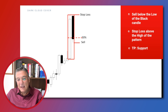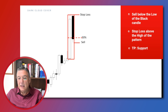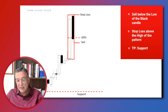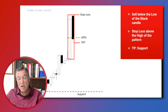We enter right below the low price of the second candlestick of the pattern, we place a protective stop loss at the high price, and we take profit by closing the whole position at the next support level.